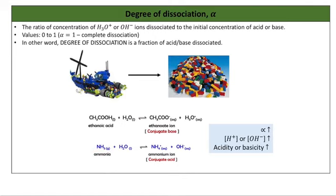Similarly, NH3 will dissociate into NH4+ and OH-. So if the degree of dissociation is high, it means the concentration of H+ and OH- is also high. If H+ concentration is high, acidity is high. If OH- concentration is high, basicity is high.